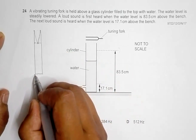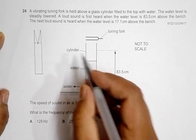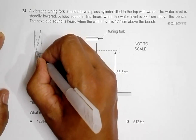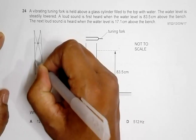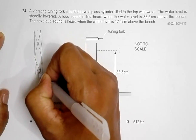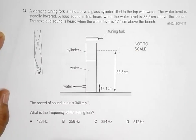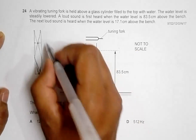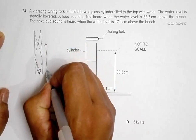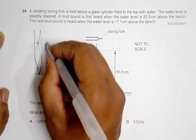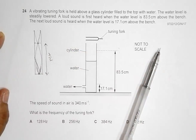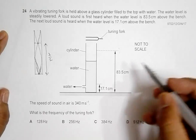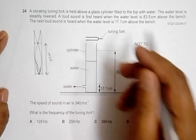The second loud sound occurs when the water level drops to the lower position, giving another resonance. The wave formed between these two positions completes half a wavelength. So the length between the two resonance positions is equal to lambda by 2.